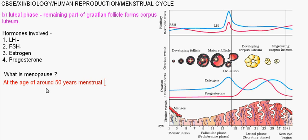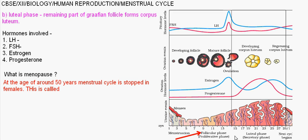Now coming to the image — as you can see, the first phase is the follicular phase, then the luteal phase. Both the follicular phase and luteal phase collectively form the ovarian cycle. The follicular phase constitutes the ovarian phase and luteal phase, and the other part of the cycle is the menstrual phase.